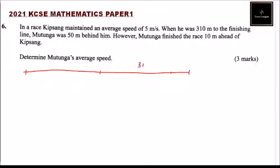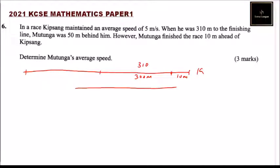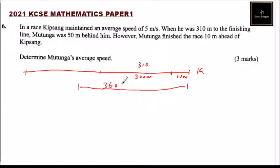So for Kipsang, this distance is 310 meters. Because Motunga finished 10 meters ahead of him, we can say Kipsang covers 300 meters and this 10 meters is where Motunga finishes ahead. For Motunga, we add 310 plus 50, so Motunga's total distance is 360 meters. With that, we can find the time taken.